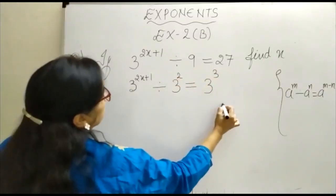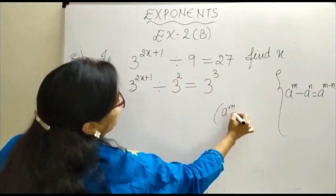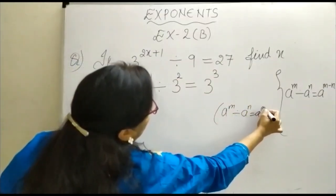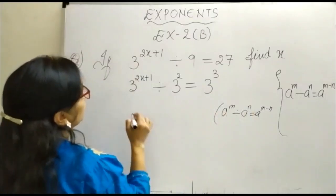Now use the formula here that a^m divided by a^n is equal to a^(m minus n), as the base is same.